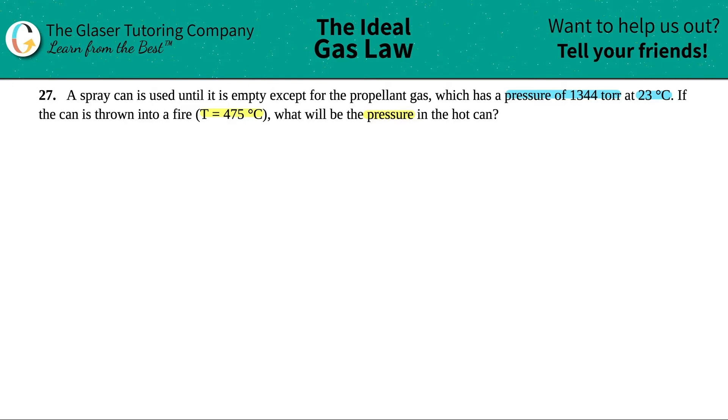Now they said that we had a propellant gas, which had a pressure of 1,344 torr at 23 degrees Celsius. So these two values, this pressure goes along with this temperature. So I'm going to say I have a P value. P stands for pressure, and my pressure is 1,344 torr. And then I have a corresponding temperature value. So I'll say I have temp of 23 degrees Celsius.